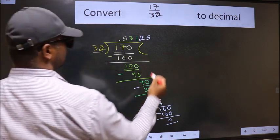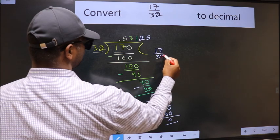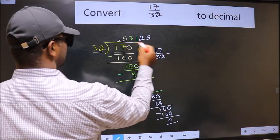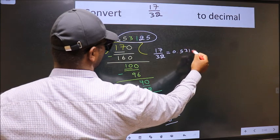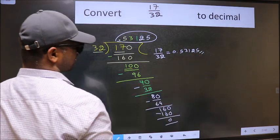Therefore, the decimal of 17 by 32 is 0.53125. This is our answer.